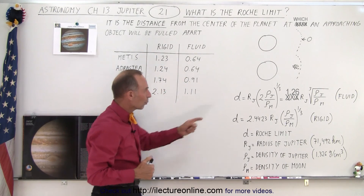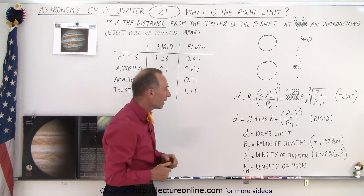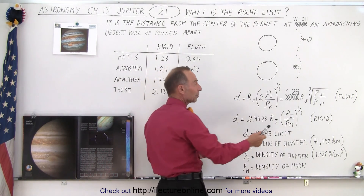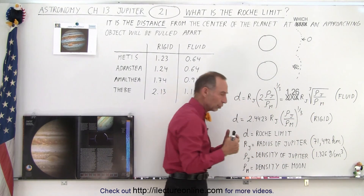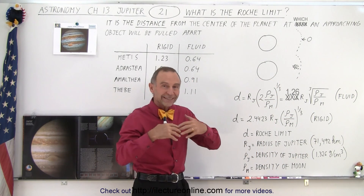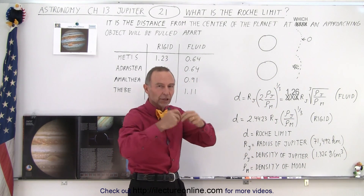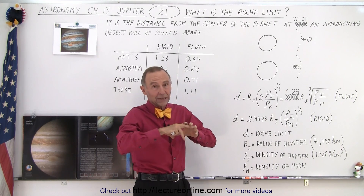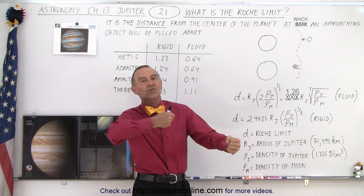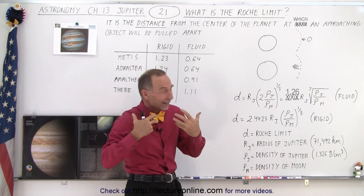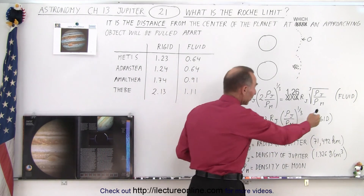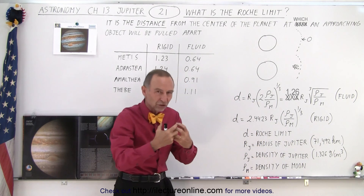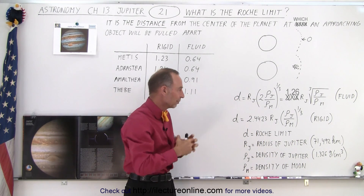We can calculate the Roche limit, and there are two limits. One is if the object is fluid — that could also be particles inside a ring that are not attached to one another. We can think of that as a fluid, or if it's completely made out of liquid. It would be a lot easier to shred that object apart if it was fluid, as compared to it being rigid, like a solid rock type of moon.